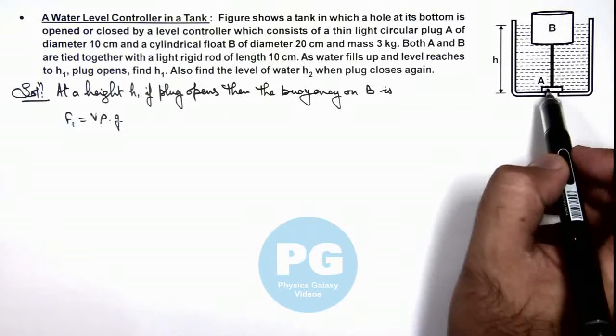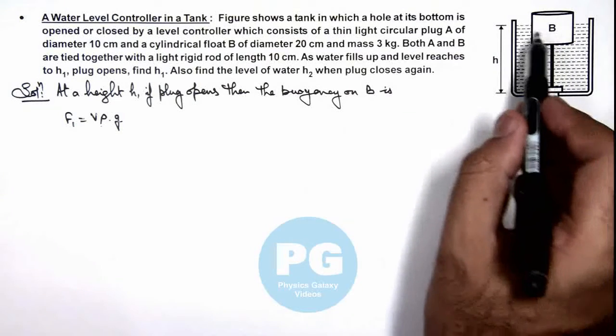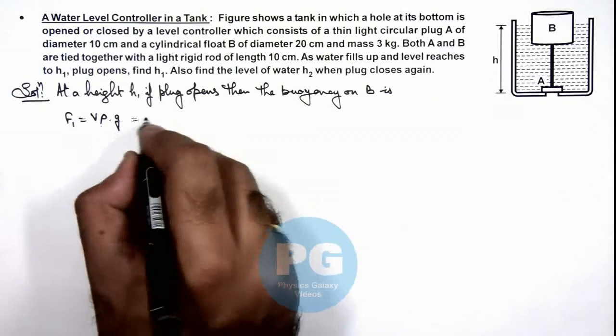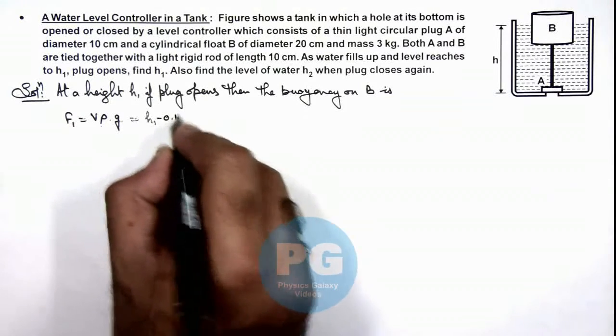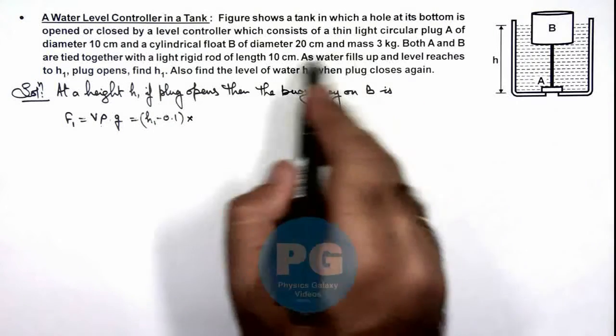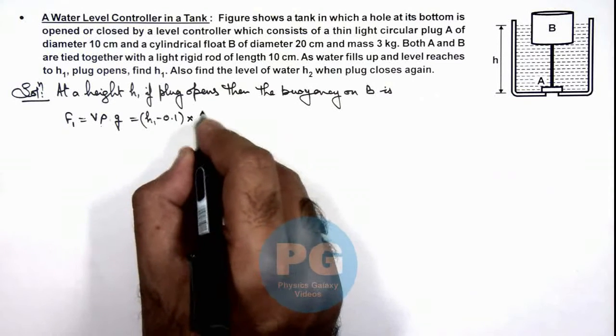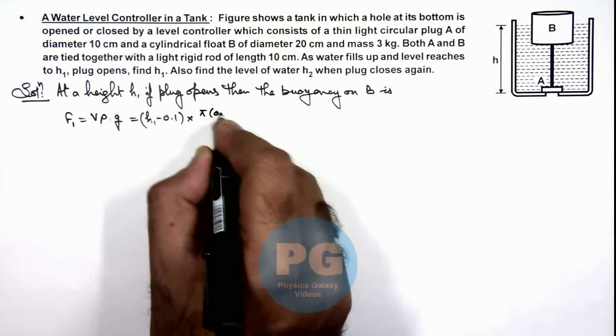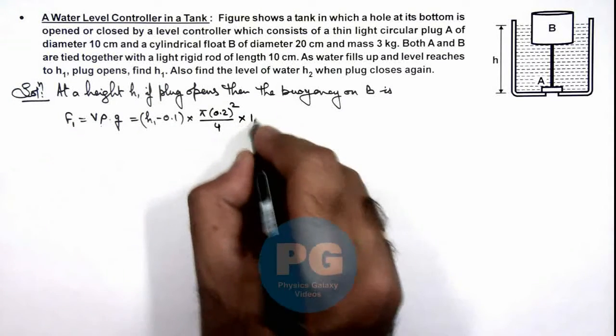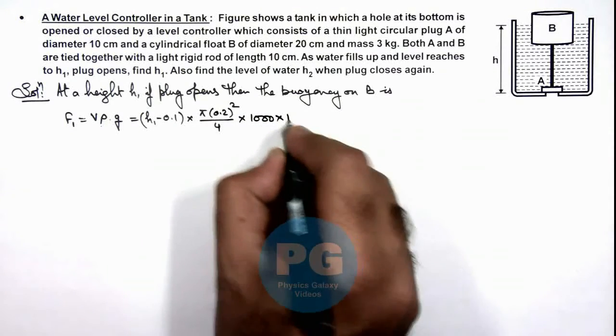As the rod is of length 10 cm, the submerged depth of the cylinder would be h₁ minus 0.1 multiplied by its cross sectional area π(0.2)²/4, multiplied by water density 1000 and g to be 10.